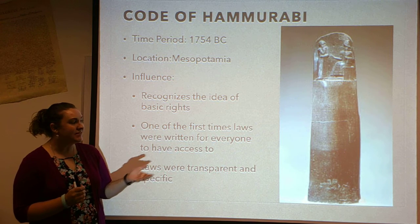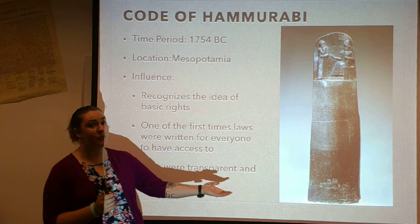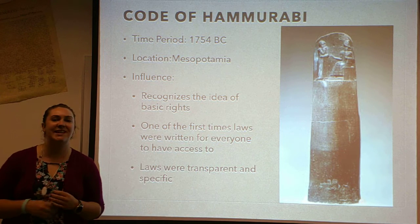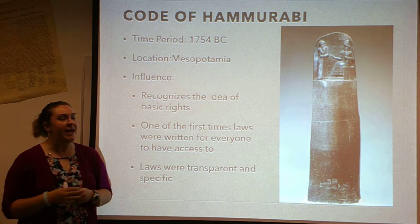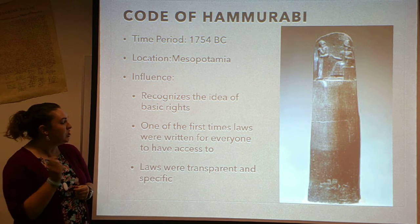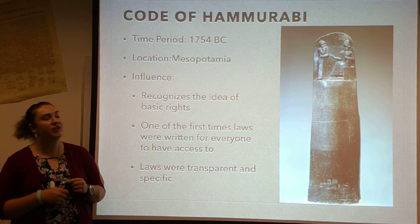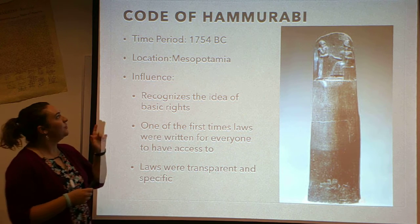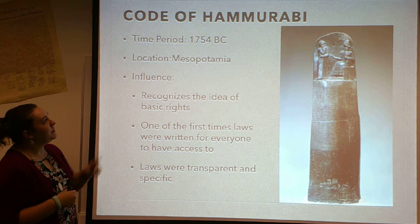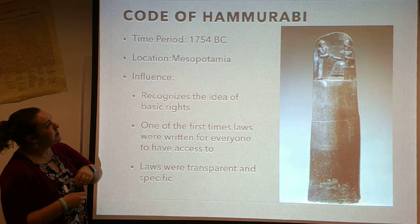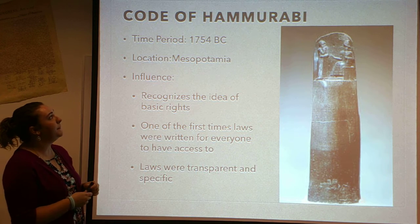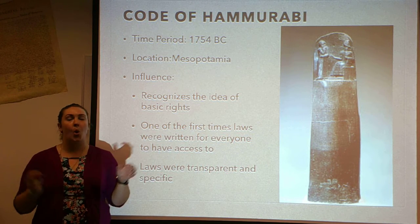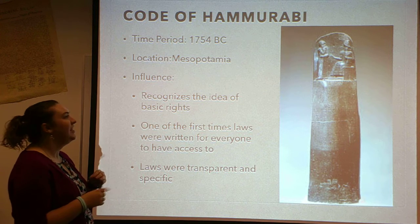First I want to talk about the Code of Hammurabi. As you can see, it is quite an impressive statue. It actually stands eight feet tall and contains 272 laws. It was made in Mesopotamia in 1754 B.C. — a real long time ago.